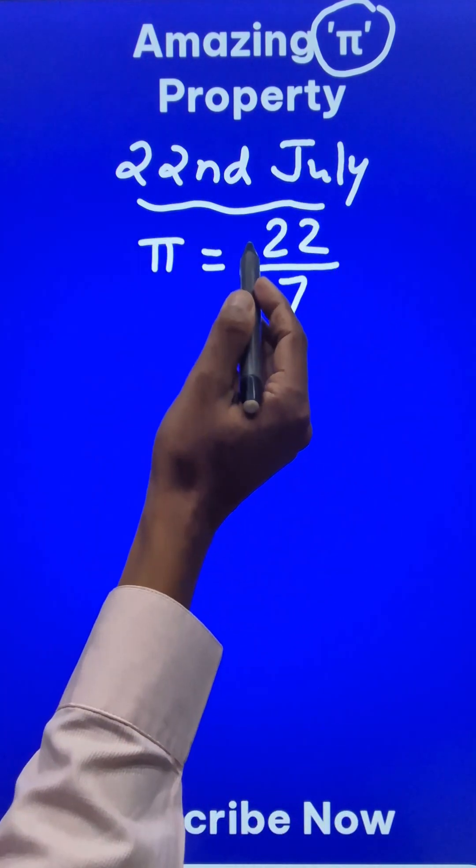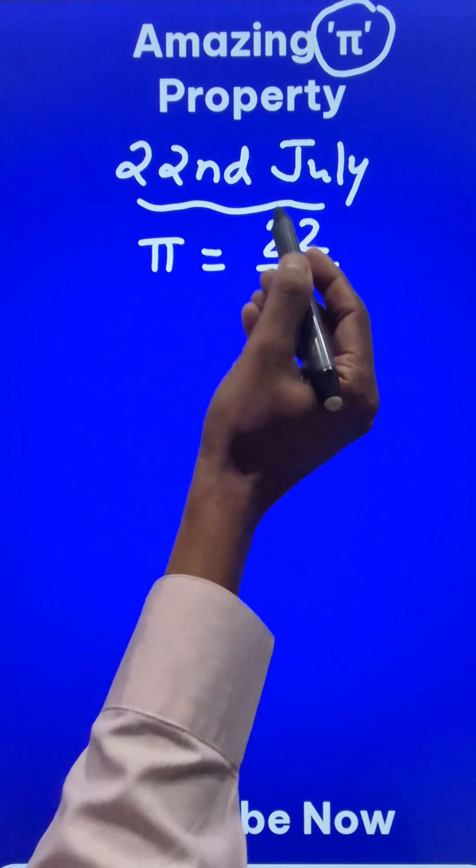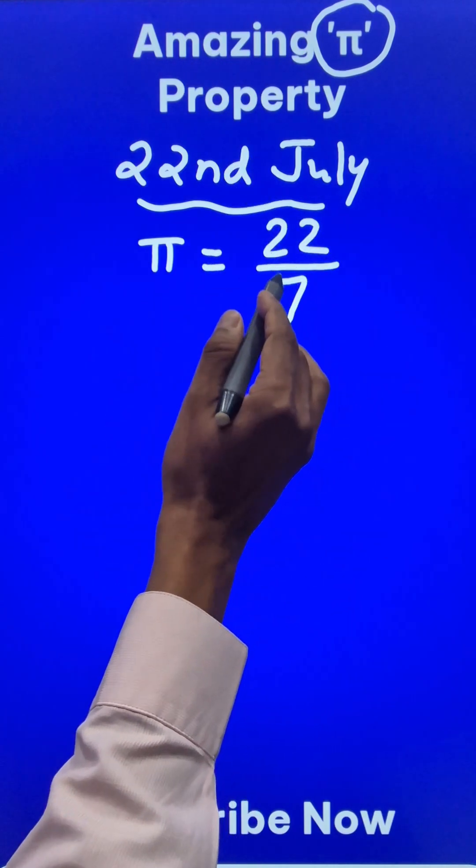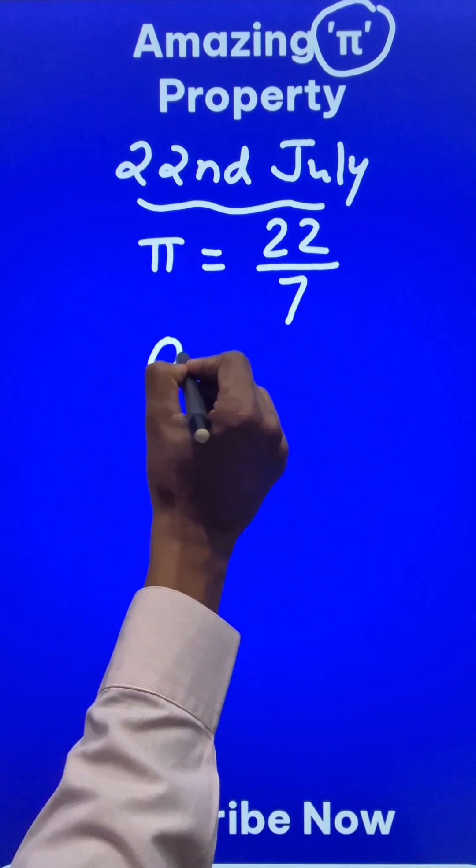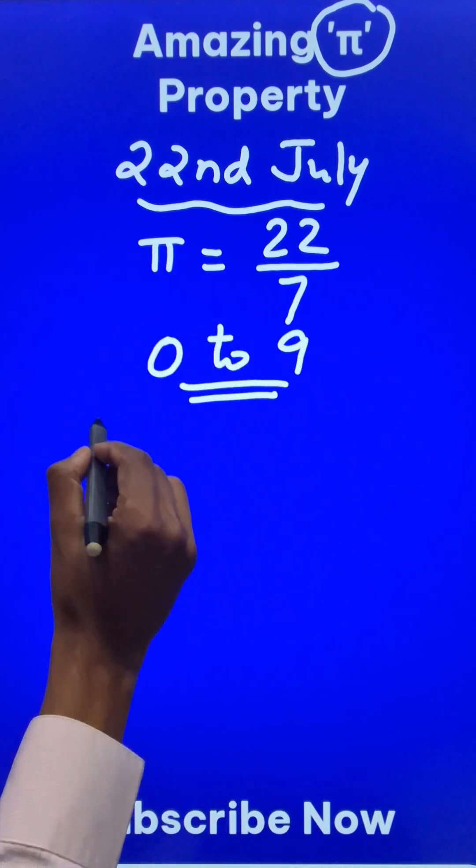The value 22 by 7 is actually related to the pan-digital numbers. The pan-digital numbers are the numbers which contain all the digits from 0 to 9. Look at this amazing property.